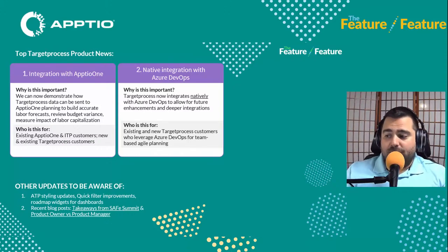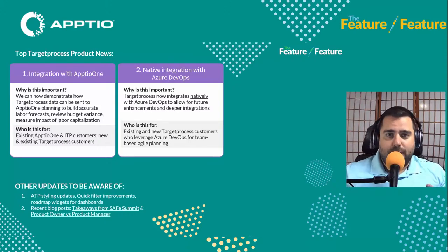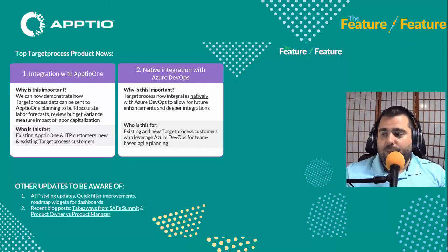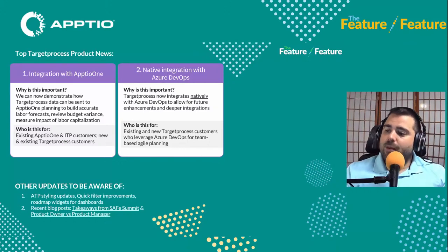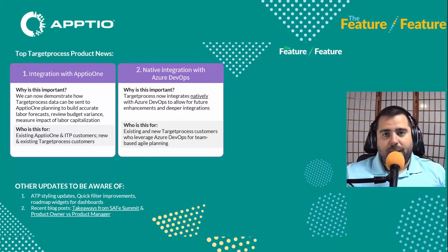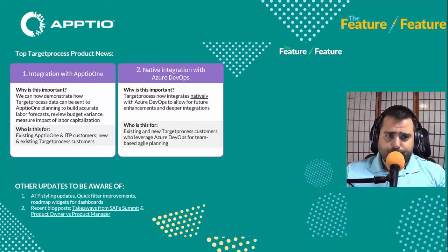Other updates for Target Process include ATP styling updates. There are also a couple of really good blog posts — takeaways from the SAFe Summit, which took place last month right before TBMC, and a really good blog post doing an analysis of product owner versus product manager and the strategy that goes along with that.